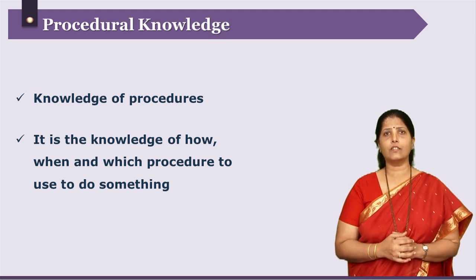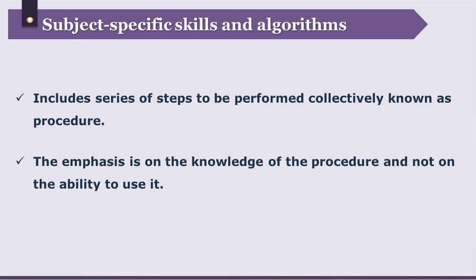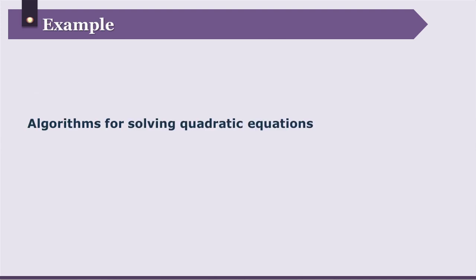Let us take a look at the subcategories of procedural knowledge. They are: knowledge of subject-specific skills and algorithms, knowledge of subject-specific techniques and methods, and knowledge of criteria for determining when to use appropriate procedures. The first subcategory — subject-specific skills and algorithms — includes series of steps to be performed collectively, which are known as a procedure. The emphasis is on knowledge of the procedure and not on the ability to use it. The learner is expected only to possess the knowledge of the procedure. For example, algorithms for solving quadratic equations or any kinds of equations.